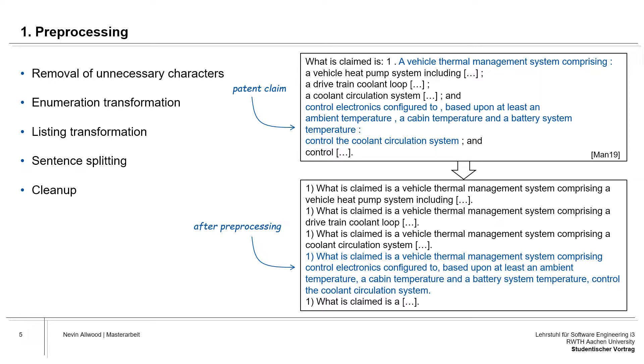The performed pre-processing first gets rid of unnecessary characters such as white spaces and new lines. The enumerations and listings constructed with colons and semicolons are broken up to form individual sentences, while the original information content is preserved. Splitting the original claim sentence into multiple smaller sentences should help the subsequent NLP to digest it.